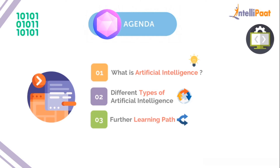So let's look at the agenda. We'll be discussing what artificial intelligence is, to clear out any doubts for those who don't know. Then we'll move on to discuss the different types of artificial intelligence, and finally we'll conclude by discussing the further learning paths you can take to get started on learning about AI for free.